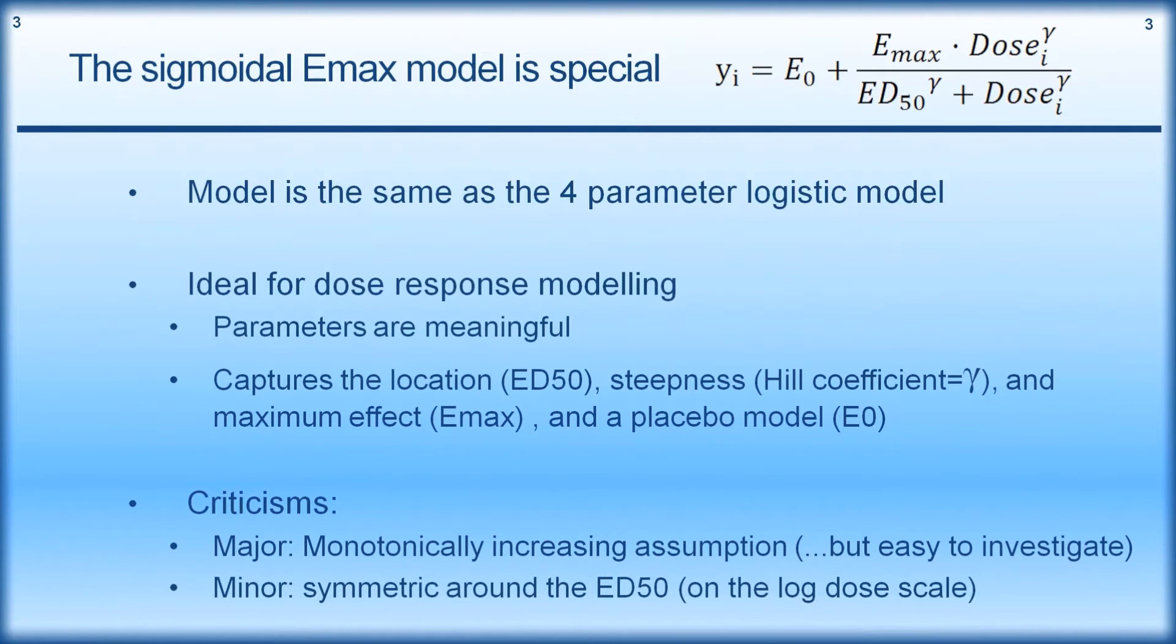Why is this so useful? Well, the first thing is that the parameters are meaningful. So we have the ED50, which is capturing the location of the dose-response. Then we have the steepness of the Hill coefficient, the gamma here, which measures how steep the dose-response increases. And then we have the maximum effect, the Emax parameter here. We also can have an arbitrarily complex placebo model so that we can describe other things that are going on with the placebo data and then measure our drug effect on top of that.